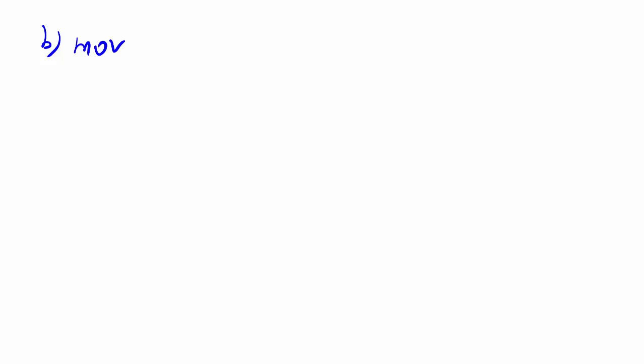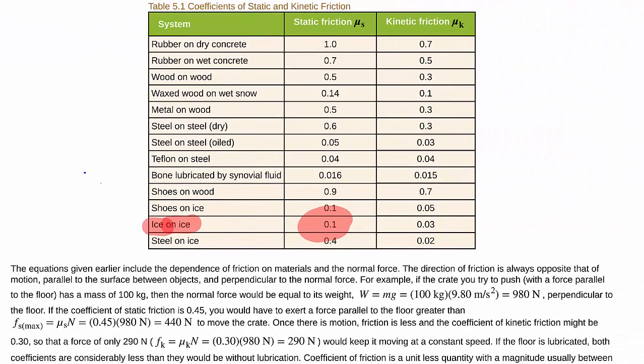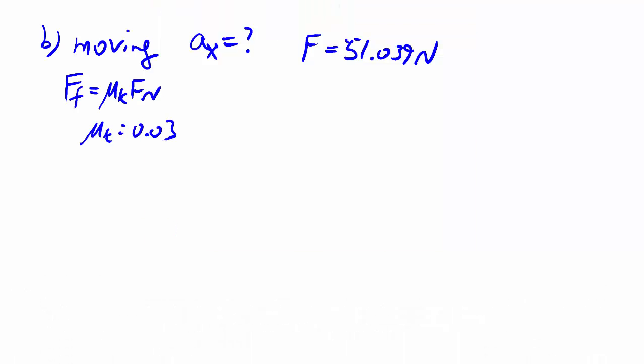For part B, we are now moving. So, AX doesn't equal 0 anymore. AX is what we're interested in. But, we're told that the F is the same as last time. Given F, we can probably figure out AX and because we're moving, FF is equal to mu K times FN and remembering from the table, we're using 0.03 as our mu K. Then, we also know, because the ground is pretty solid, the AY is equal to 0.